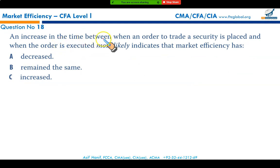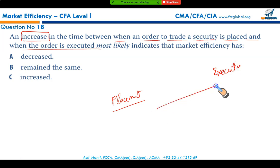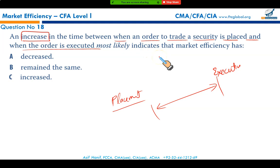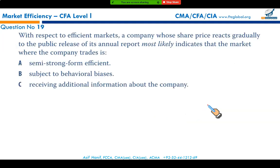An increase in time between when an order to trade a security is placed and when the order is executed is not good — the lag should be as short as possible. An increase in this time most likely indicates that market efficiency has decreased, because increasing the lag means the market has become less efficient. That makes option A the correct answer.